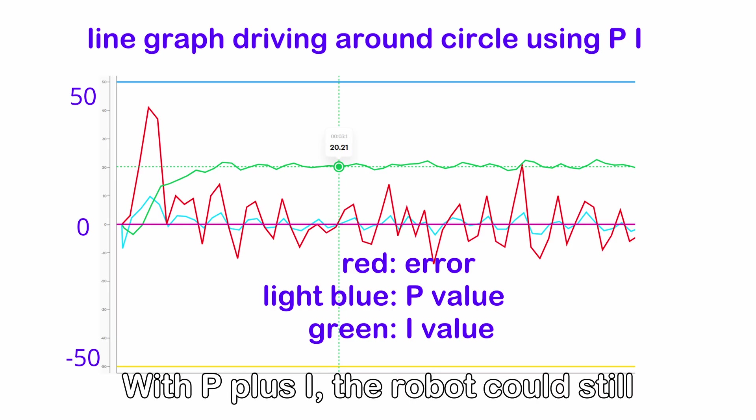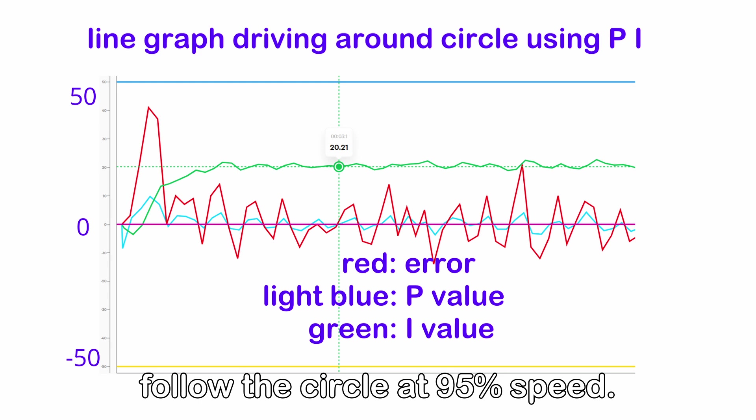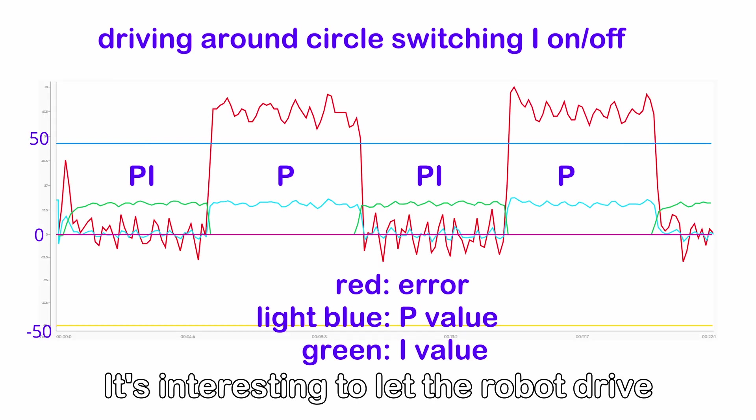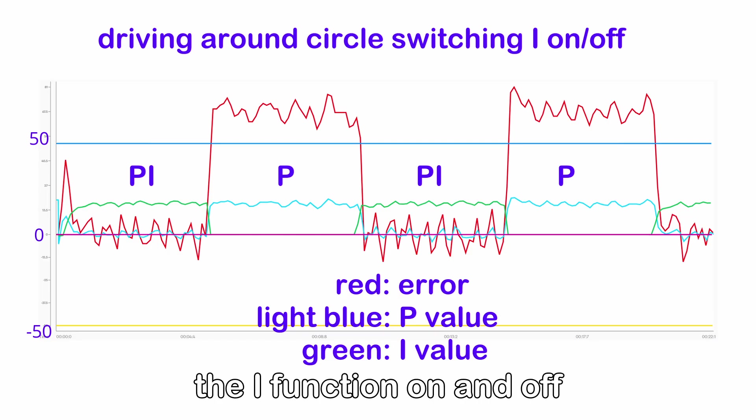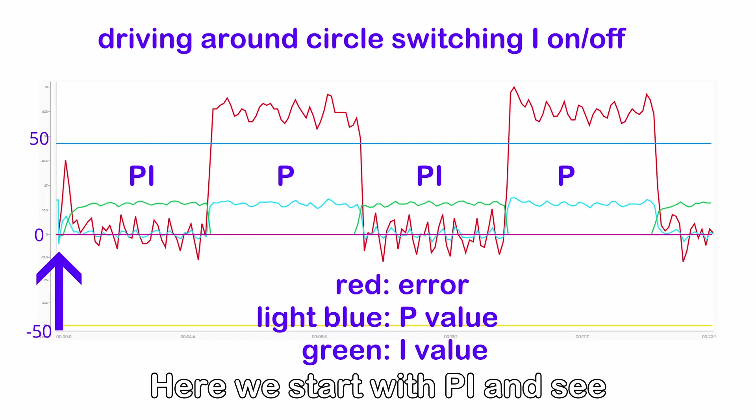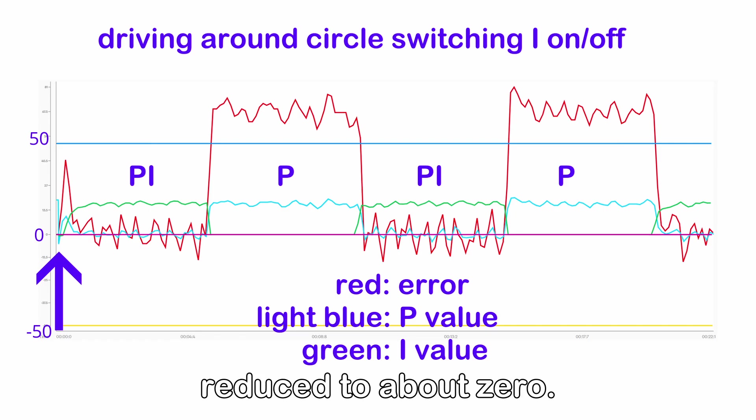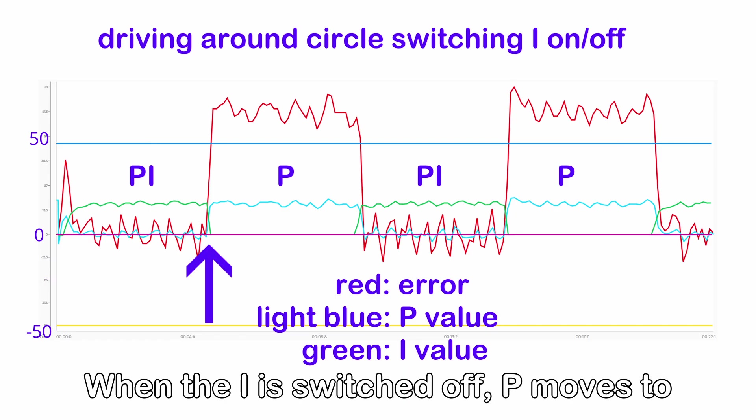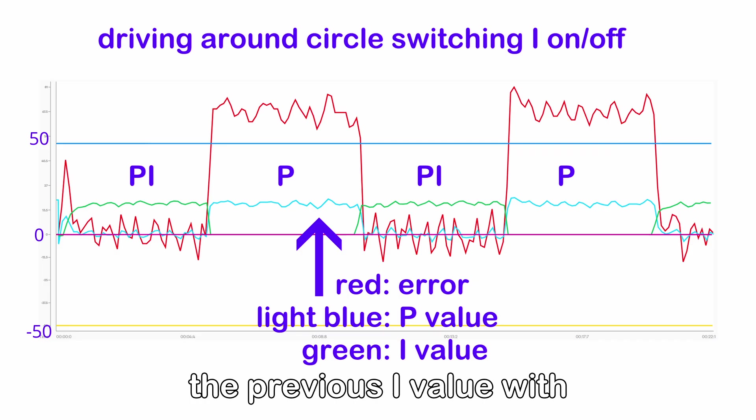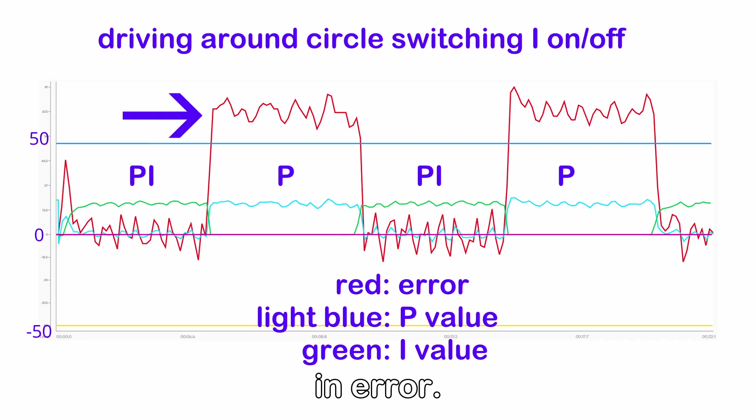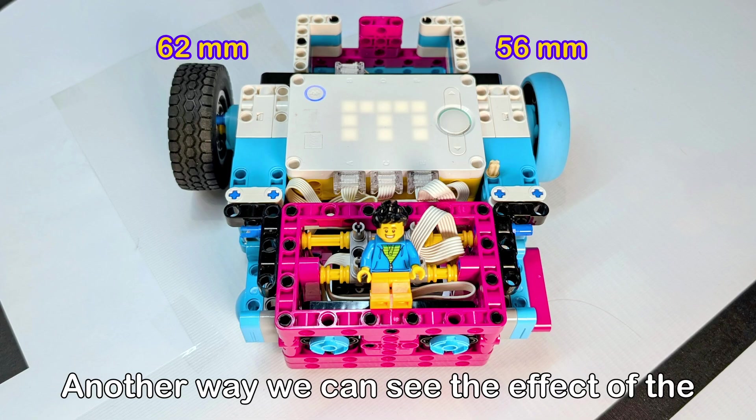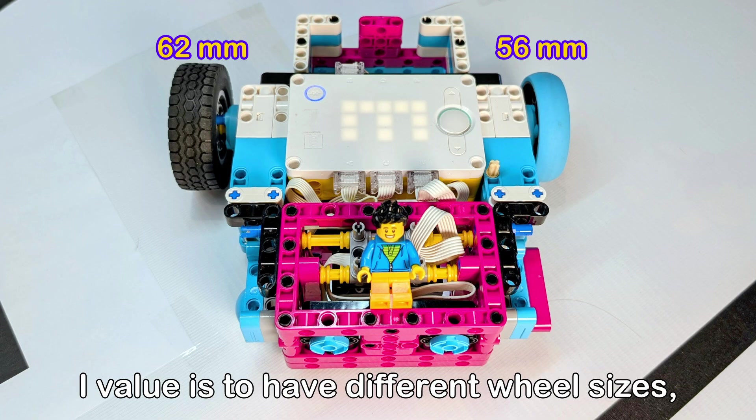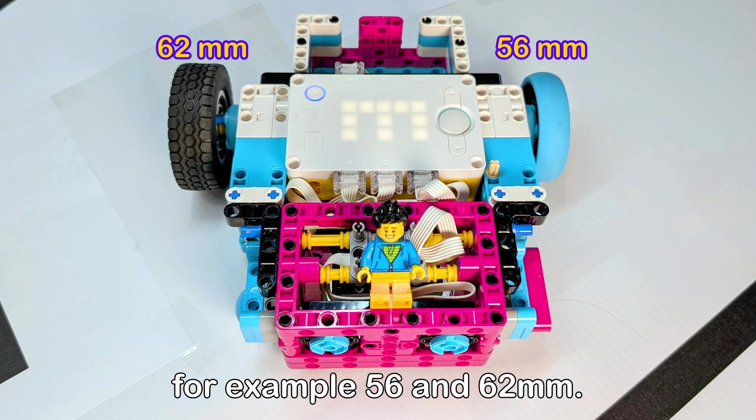With P plus I, the robot could still follow the circle at 95% speed. It's interesting to let the robot drive in a circle and switch the I function on and off. Here we start with PI and see the error and P values quickly reduce to about 0. When the I is switched off, P moves to the previous I value with a corresponding increase in error. Another way we can see the effect of the I value is to have different wheel sizes. For example, 56 and 62 millimeters.